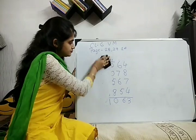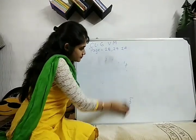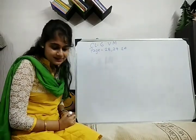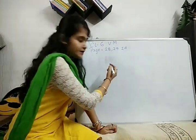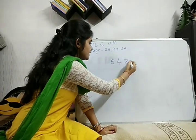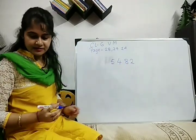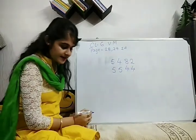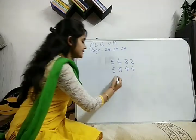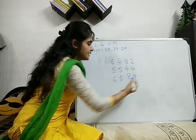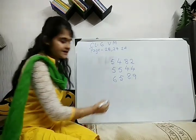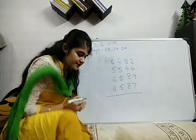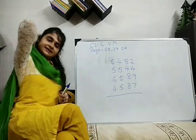Next question. We are doing page number 28, question number 6. The numbers are: 5, 4, 8, 2 — then 5, 4, 8, 2 — next 5, 5, 4, 4 — then 5, 5, 4, 4 — next 6, 5, 8, 9 — then 6, 5, 8, 9 — then 4, 5, 8, 7 — and 4, 5, 8, 7. So from where are we going to start? We will start from our right end.